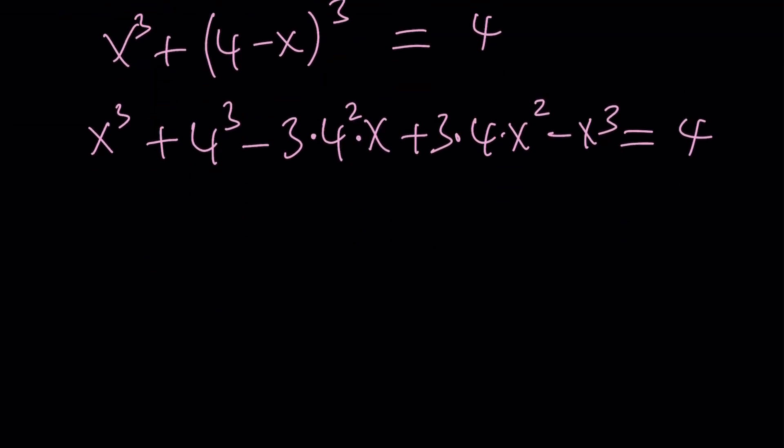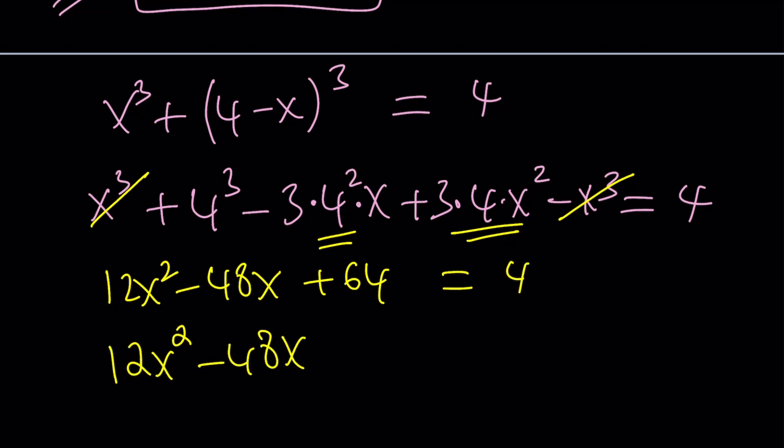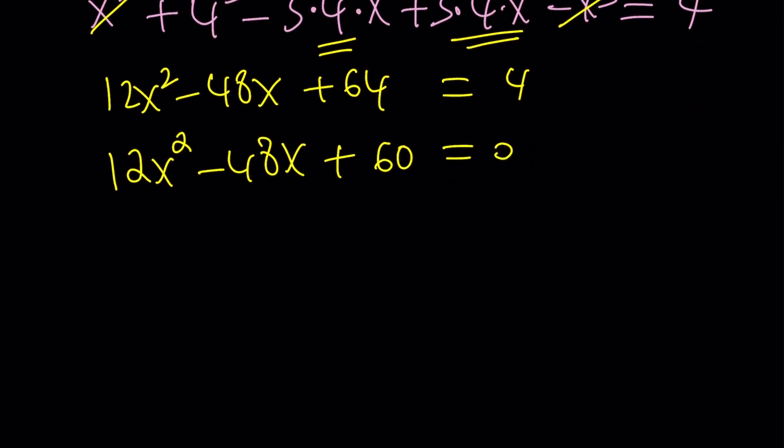Obviously, one of the most important things here is that x cubed cancels out. Now, let's see what we have left. We have 12x squared, and then minus 3 times 16, which is 48x, plus 64 minus 4. We're going to subtract 4 from both sides, and that gives us 12x squared minus 48x plus 60 equals 0.